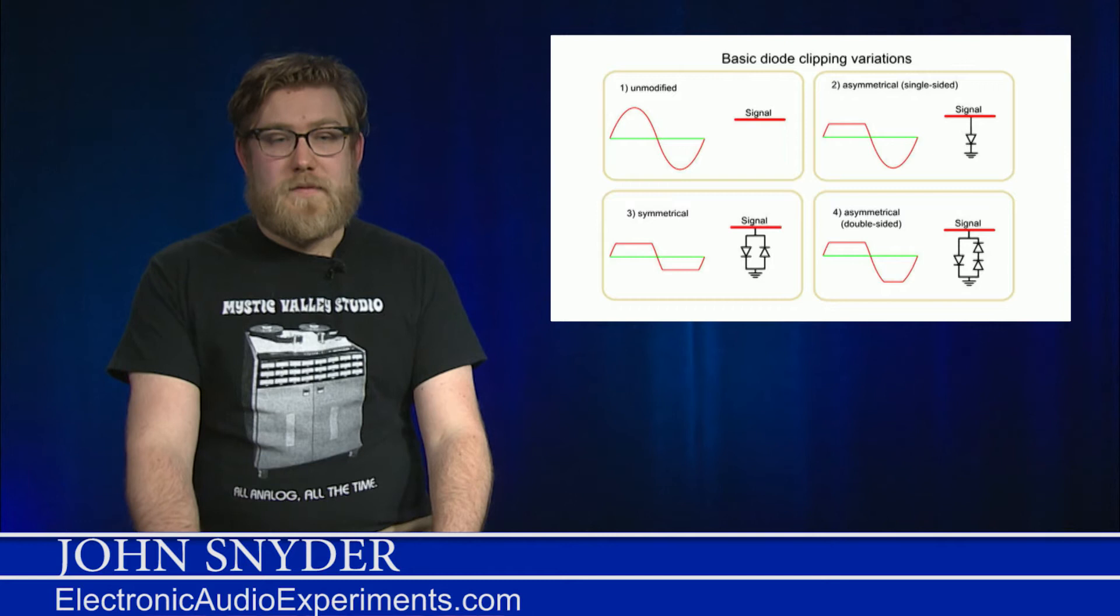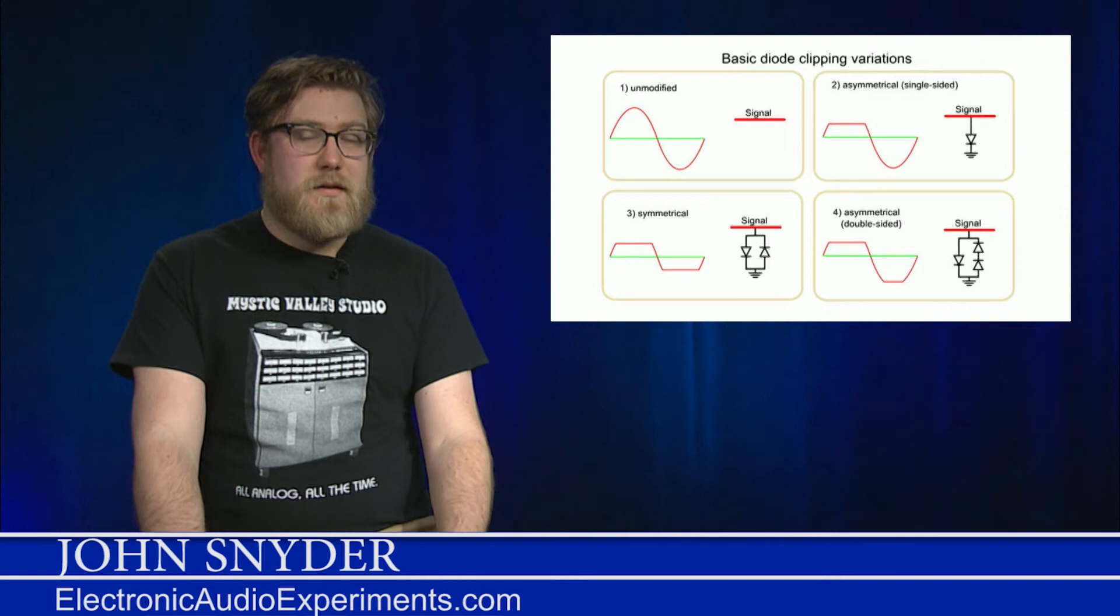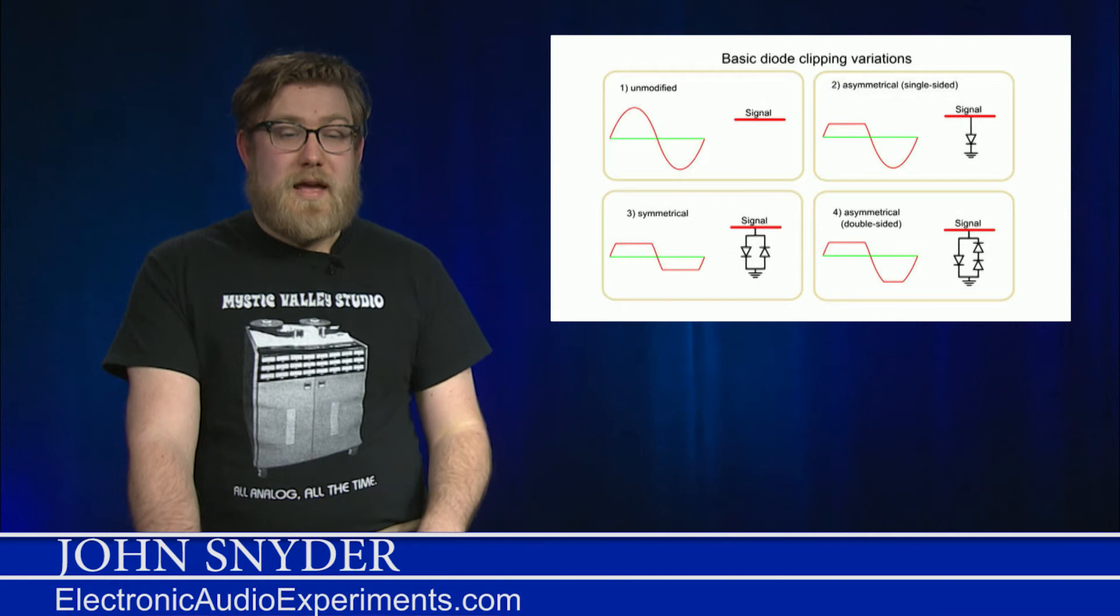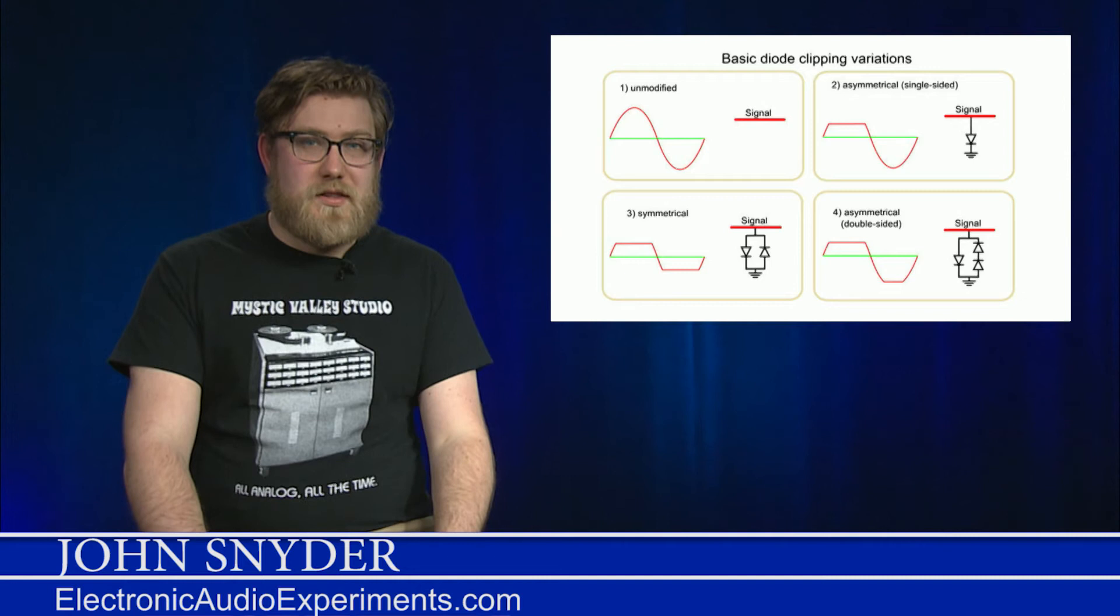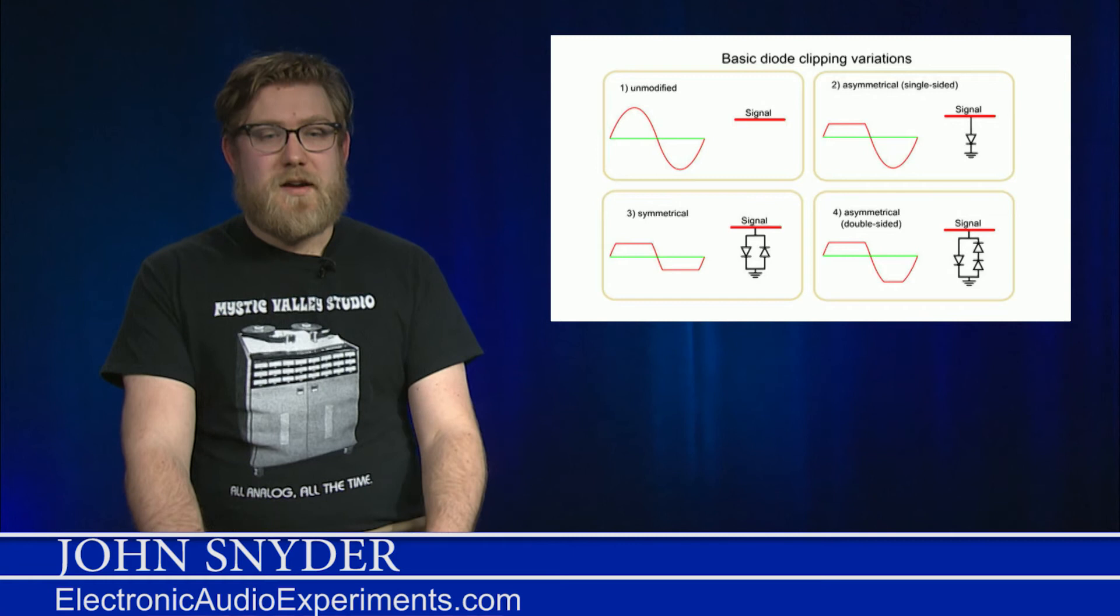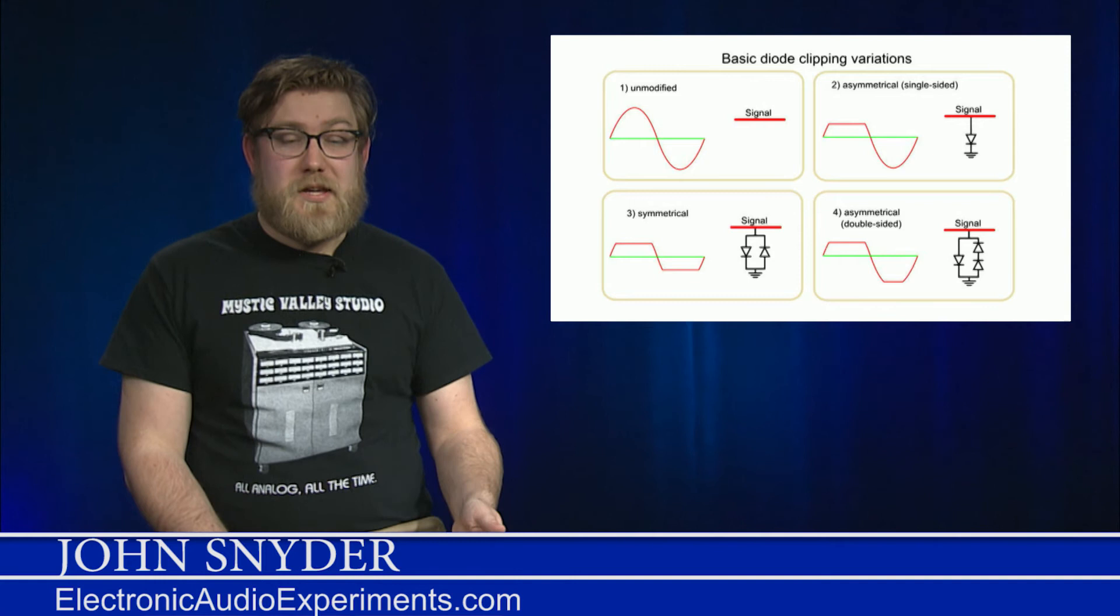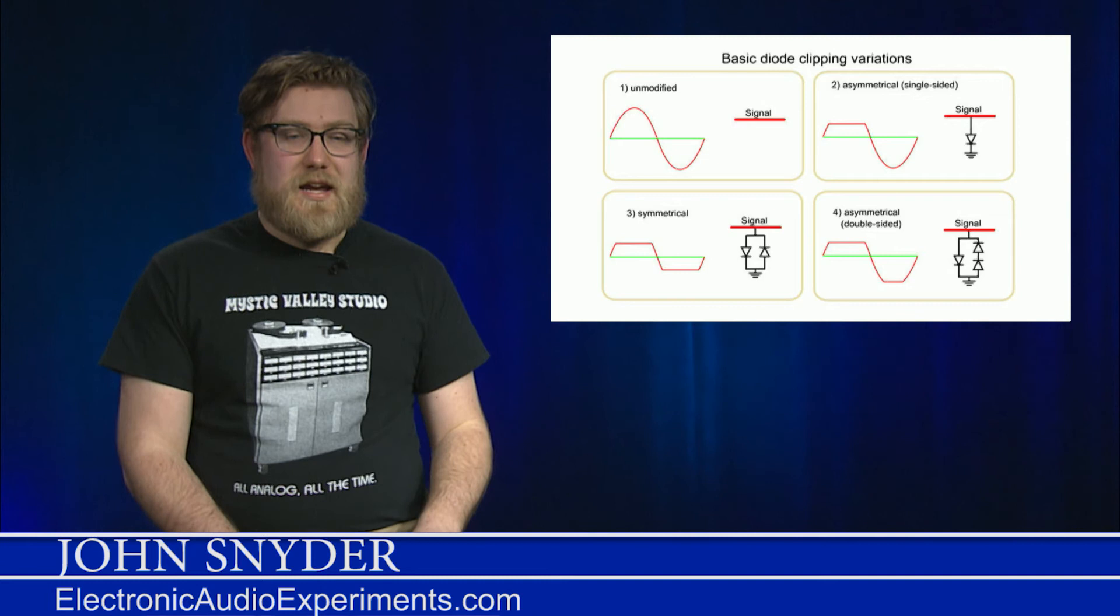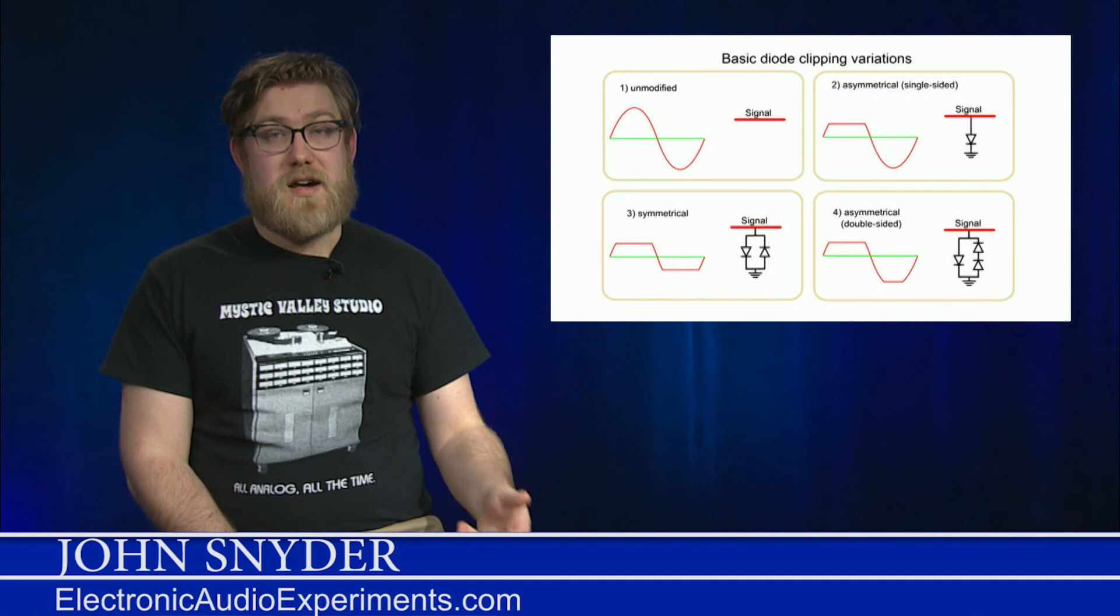So for picture number two here, this is what we call an asymmetrical or single sided clipping. So if you just have one diode to ground, you're only going to cut off the top of the waveform, but not the bottom. If you add another diode back to back with this one, you'll cut off both sides. And this is what you see most commonly in distortion circuits. You'll find this in the Distortion Plus, you'll find this in the Proco Rat, you'll find a form of this in the Ibanez Tube Screamer, and literally hundreds of others use something kind of like this. You can get really crazy and you can mix and match different diodes in order to get something more complicated, like in picture four here, where two diodes are on one side and one is on the other, and one side clips a little bit more suddenly than the other. The human ear will notice different harmonic content based on what's happening.